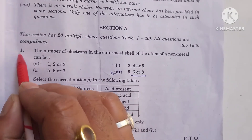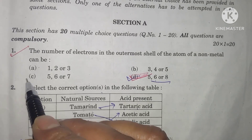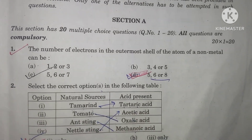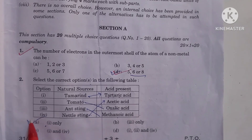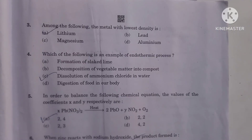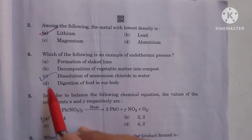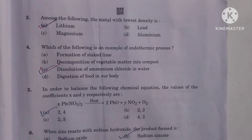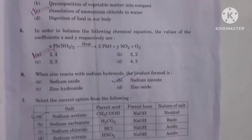In question number 1, C option is the correct option. In question number 2, A option is the correct option. Question number 3, A option is the correct option. Question number 4, C option is the correct option. In question number 5, A is the correct option.